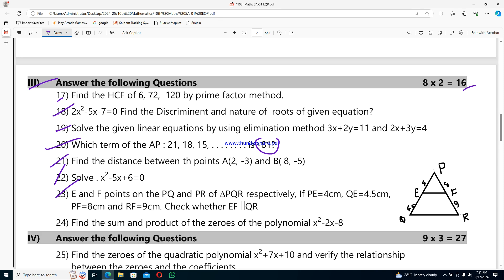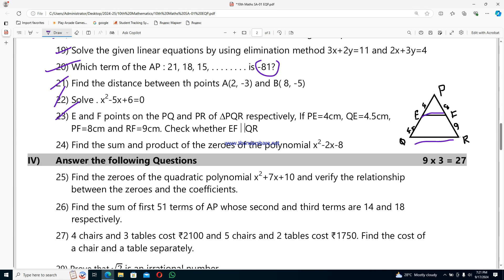and PR of triangle PQR respectively. If PQ is 4 cm, QE is 4.5 cm, and PF is 8 cm, and RF is 9 cm, then check whether EF is parallel to QR.